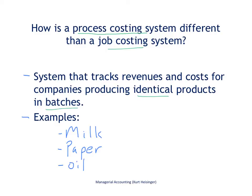What are some examples of products that would use a process costing system? Milk certainly fits in that category, as it is produced in high volume and it's an identical product. Paper would also fit, because again it's an identical product produced in large batches — companies would typically produce thousands of pages of paper all at once. And oil as well would fall into this category — an identical product produced in large batches. These are all ideal candidates for products that would use a process costing system rather than a job costing system.